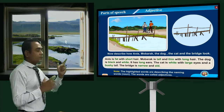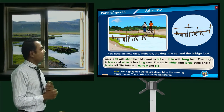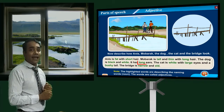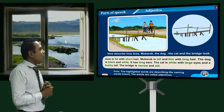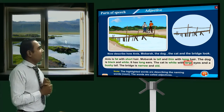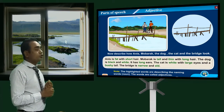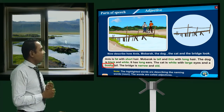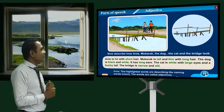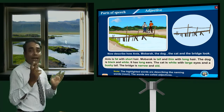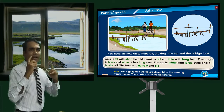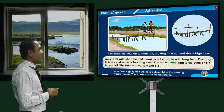All highlighted words discuss about the naming word. 'Long' is highlighted and discussed about the hair. 'Large' is highlighted and discussed about the eyes — eyes is a noun. 'Bushy' discusses about the tail. 'Narrow' and 'old' discuss about the bridge. So the words that describe a noun are called adjectives. An adjective is a word which describes the noun.